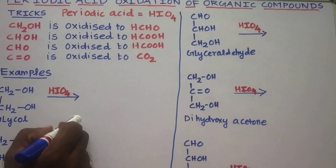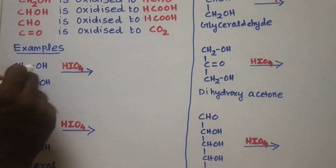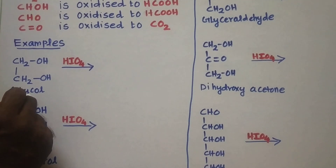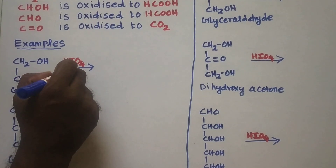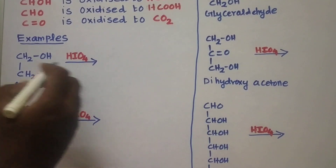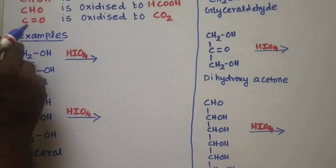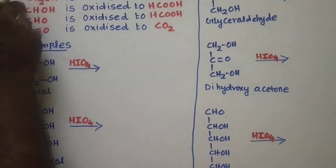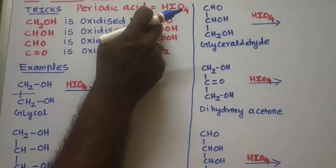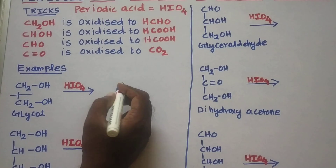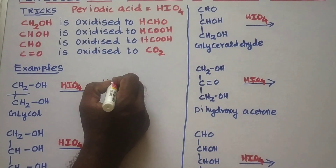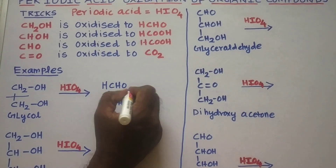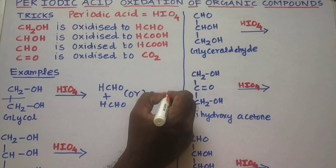By using this trick, we are going to solve a number of problems. First, example number 1: CH2OH single bond CH2OH. It is well known that this compound is ethylene glycol. It undergoes oxidation with periodic acid. Now we are going to split the compound into two parts. The top part is CH2OH and the bottom part is CH2OH. Both are primary alcohol groups. Therefore, they are oxidized to HCHO. It means we are going to get two molecules of formaldehyde — HCHO plus HCHO.